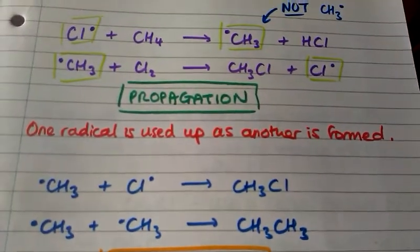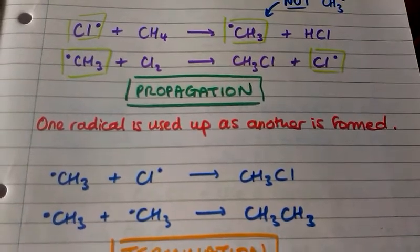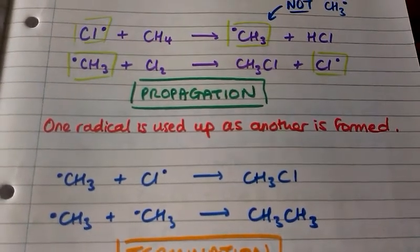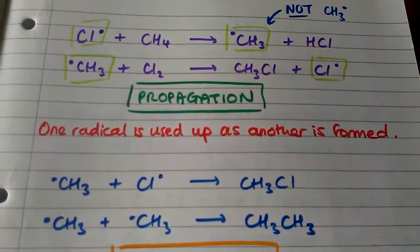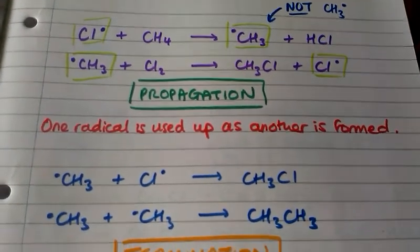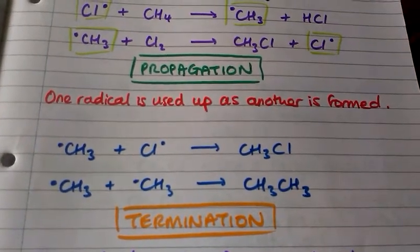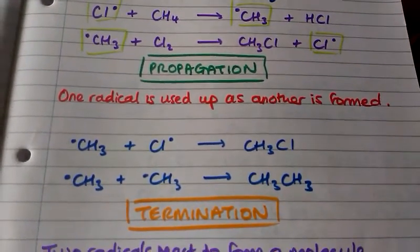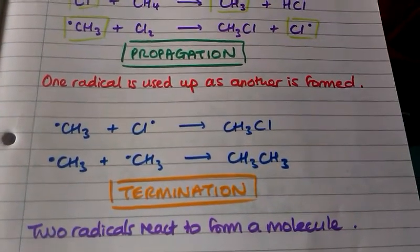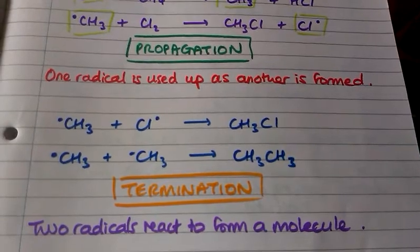Next we have a methyl radical reacting with a chlorine radical to form chloromethane. We also have two methyl radicals reacting to form ethane. Both of these are termination steps, and these are easy to recognize because on the left-hand side we have two radicals reacting together to form a molecule on the right-hand side.